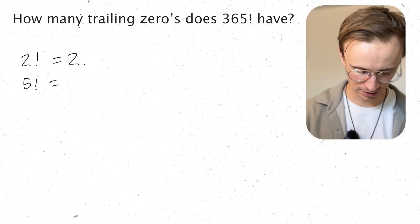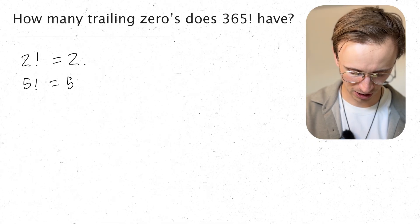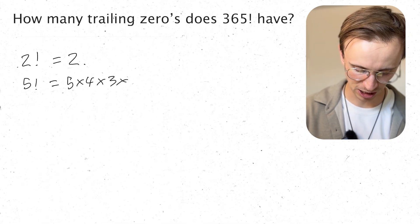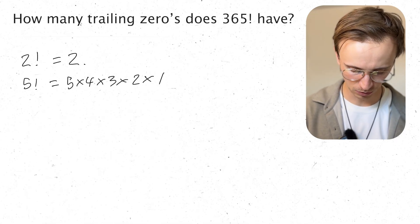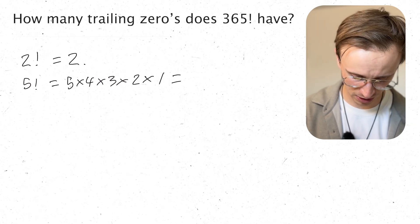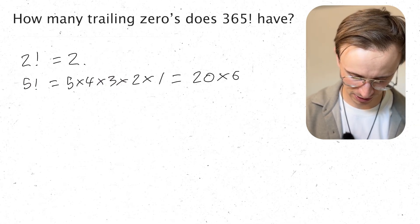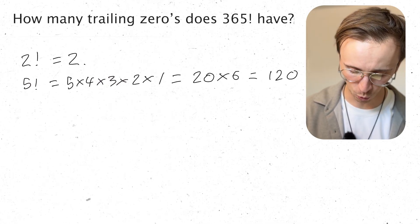5 factorial is equal to 5 times 4 times 3 times 2 times 1. Well that's equal to 20. Well that's equal to 20 times by 6, which is equal to 120. So 1 trailing 0.